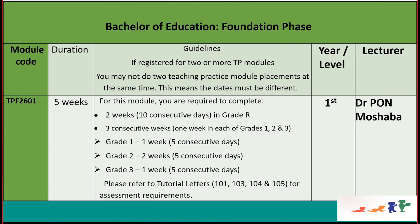For this teaching practice module TPF2601, for your five weeks, you have to do two weeks — which is 10 consecutive days — in Grade R. I've posted the correct register on the MyUNISA module site; please use that register. The dates are in line with this information: two weeks in Grade R, then one week in Grade One, one week in Grade Two, and one week in Grade Three. You must do all grades — Grade R, 1, 2, and 3.